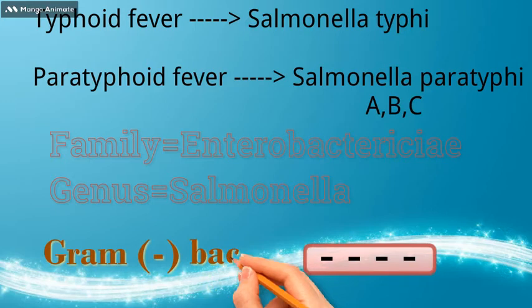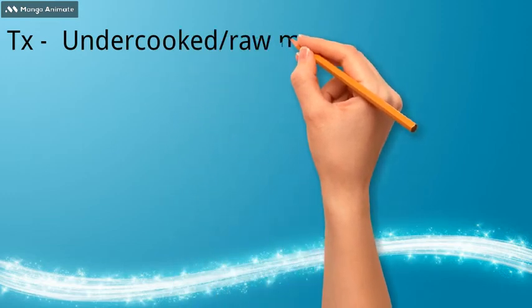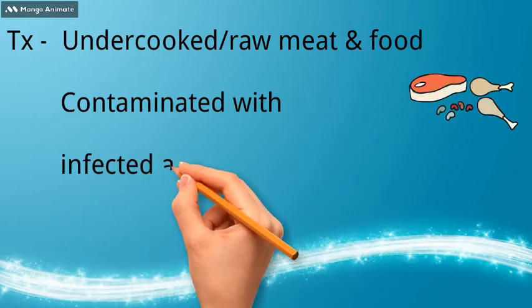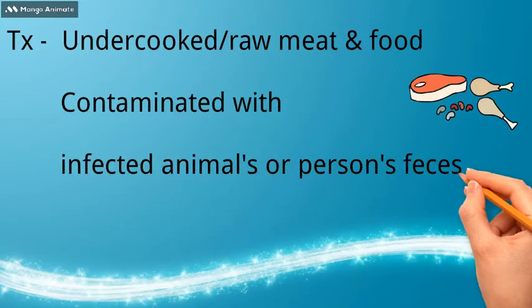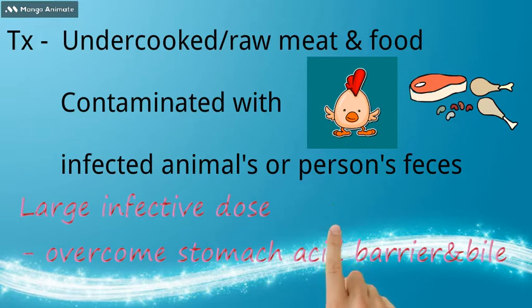They are gram-negative bacilli. Salmonella is transmitted by consumption of undercooked or raw meat, or food contaminated with infected animals' or persons' feces. To contract enteric fever, a larger infective dose of bacteria is required — approximately 10 to the power of 6 bacterial cells. This large infective dose is required to overcome the stomach acid barrier and bile.